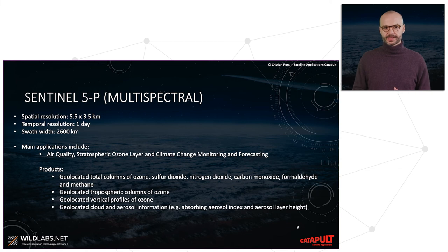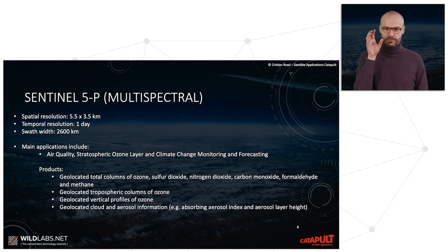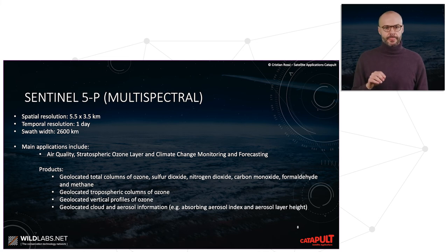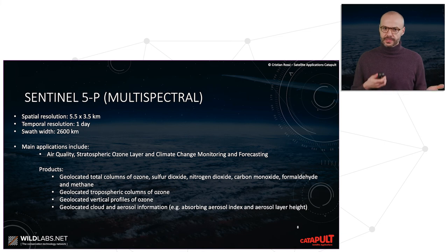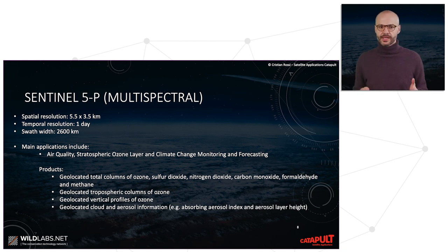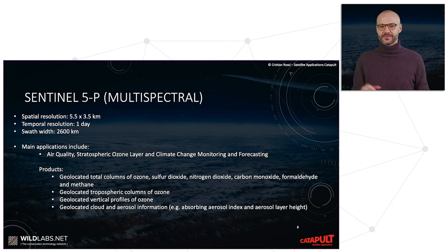Sentinel-5P is another multispectral dataset used to derive atmospheric components, specifically ozone, sulfur dioxide, nitrogen dioxide, carbon monoxide, methane, and formaldehyde — air quality, generally speaking. It is very widely used to derive climate change studies, forecasting, and so on. All products come directly as geolocated versions of those specific atmospheric components.